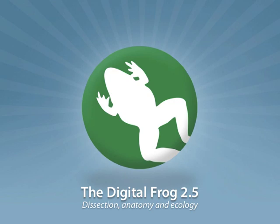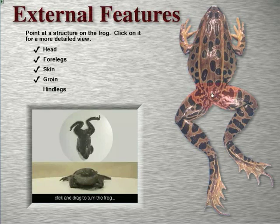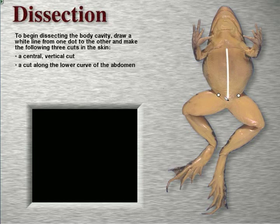The Digital Frog 2.5 offers a full frog dissection without the smell of formaldehyde. Students identify organs, make cuts with a digital scalpel, and view actual dissections with full screen video. These cuts must be made in the skin — first, make a central vertical cut.